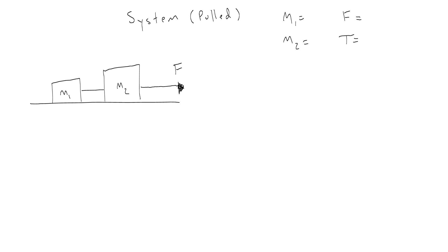So here we have two boxes, M1 and M2. Let's make up some mass. Let's say M1 is 2 kilograms and M2 is 3 kilograms. Then for this problem, I'm going to say that external force is 200 newtons and you're asked to find what the tension is between the two blocks.